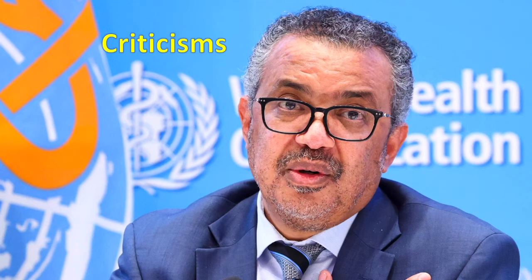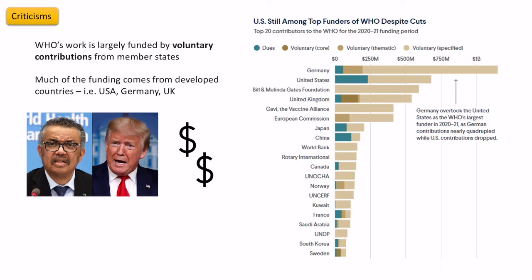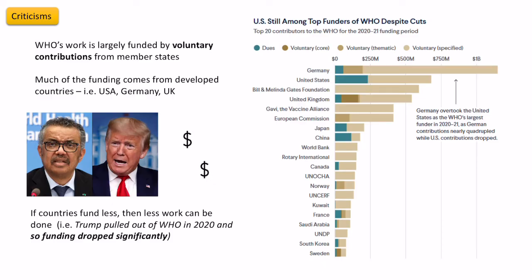There are some criticisms of the World Health Organization. One of the most significant is that most of WHO's funding comes from voluntary contributions from member states, predominantly from developed countries — with Germany, the USA, and the UK being high contributors — as well as private organizations like the Bill and Melinda Gates Foundation. This is a problem because if a country decides to reduce its funding for any reason, WHO can do less work globally. For example, Trump withdrew US funding in 2020, believing WHO was too China-centric, causing them to lose millions of dollars. Joe Biden subsequently rejoined after being elected, but this affected WHO significantly during the COVID period.